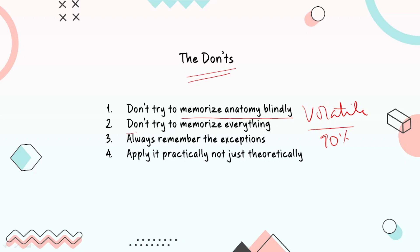The second thing is do not try to memorize everything. Anatomy is a big subject. There's like 600 muscles, there's arteries, veins, nerves. Do not try to memorize every single thing, every single origin and insertion of the muscles. Just remember what you need to remember.